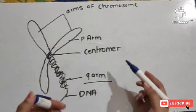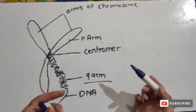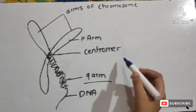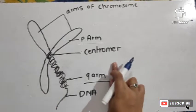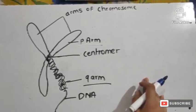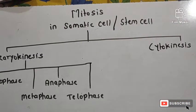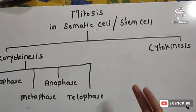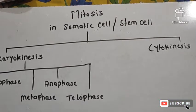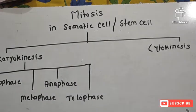The four types based on centromere position are: metacentric, submetacentric, acrocentric, and telocentric. Mitosis occurs in somatic cells and stem cells. The process involves karyokinesis and cytokinesis. Karyokinesis contains four steps: prophase, metaphase, anaphase, and telophase.